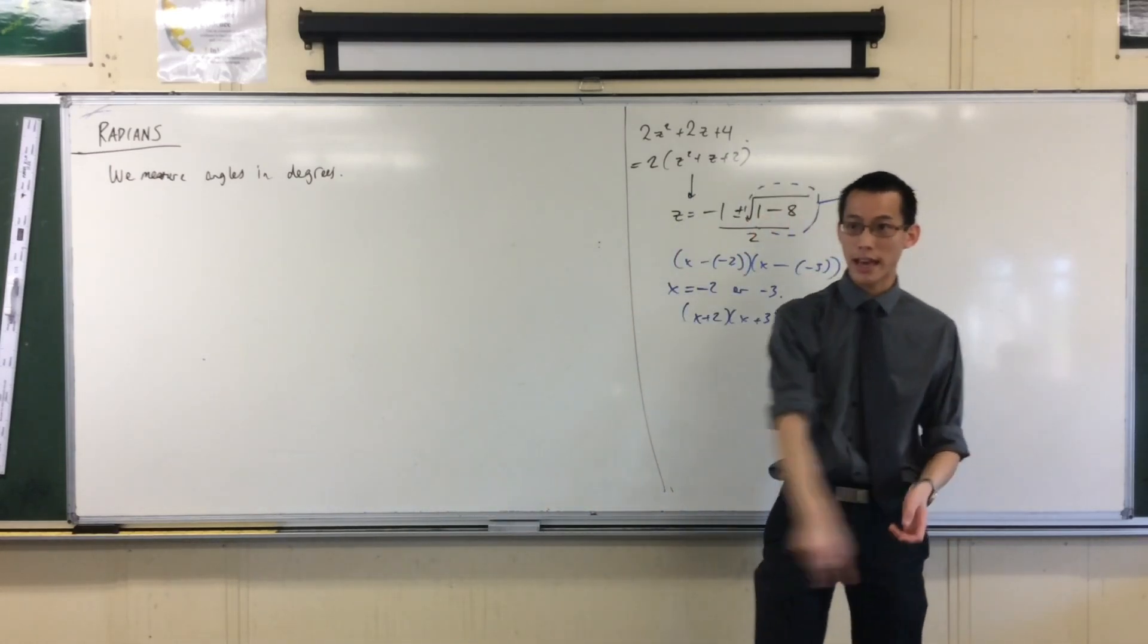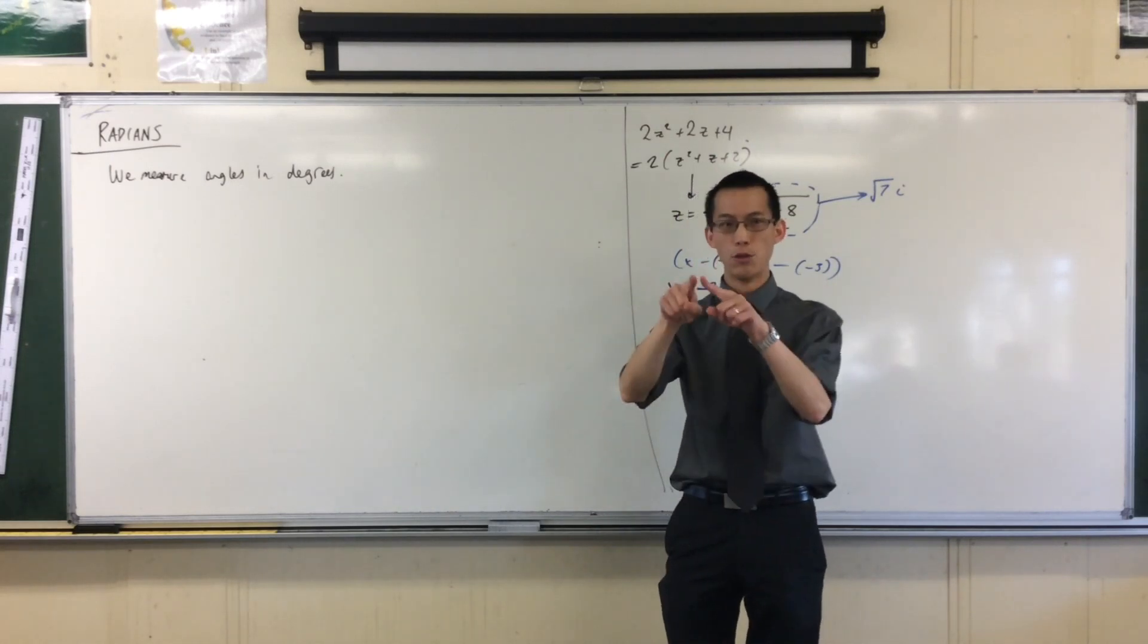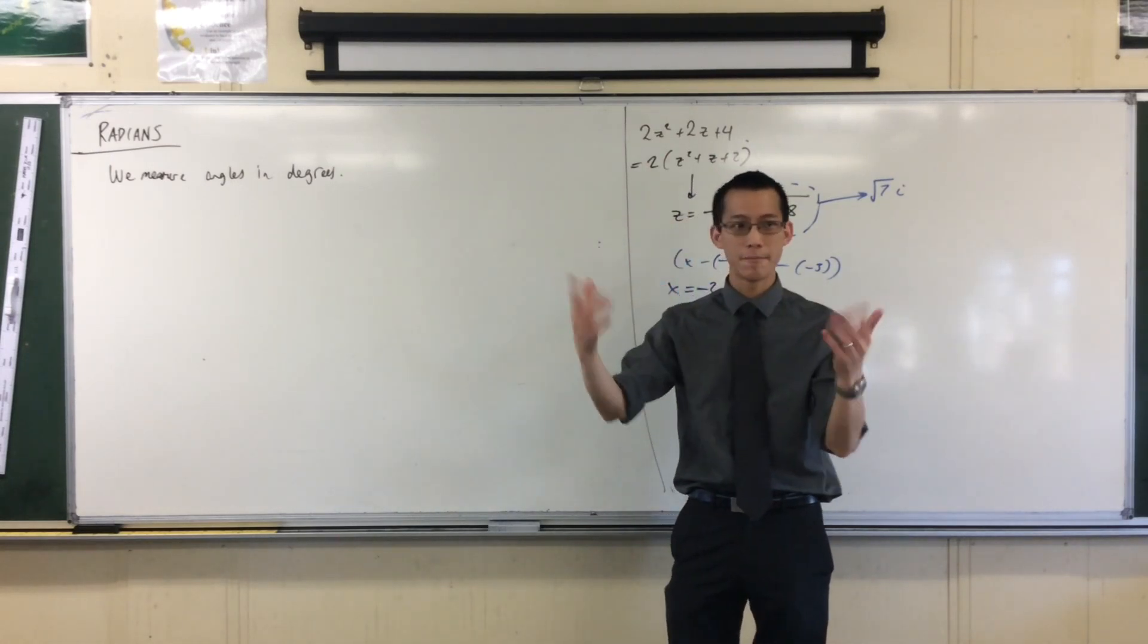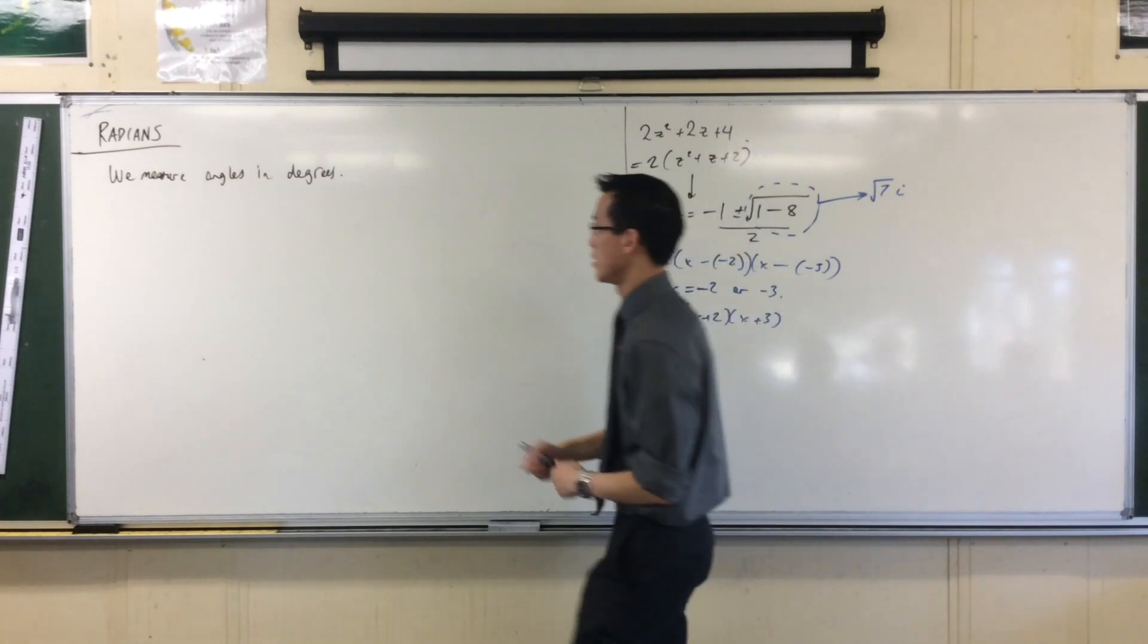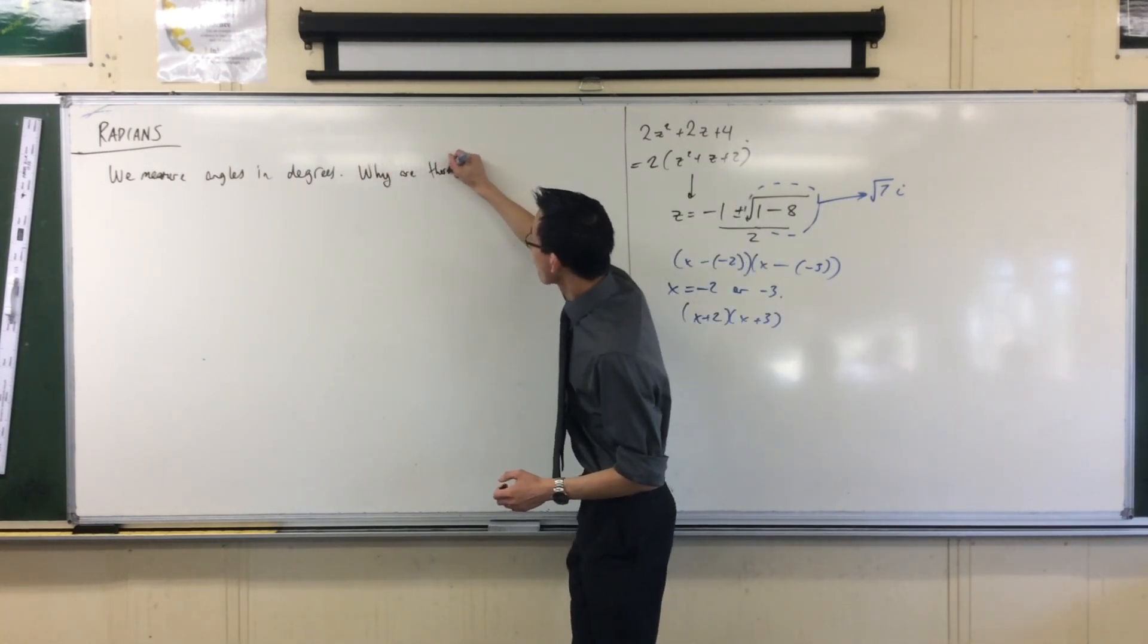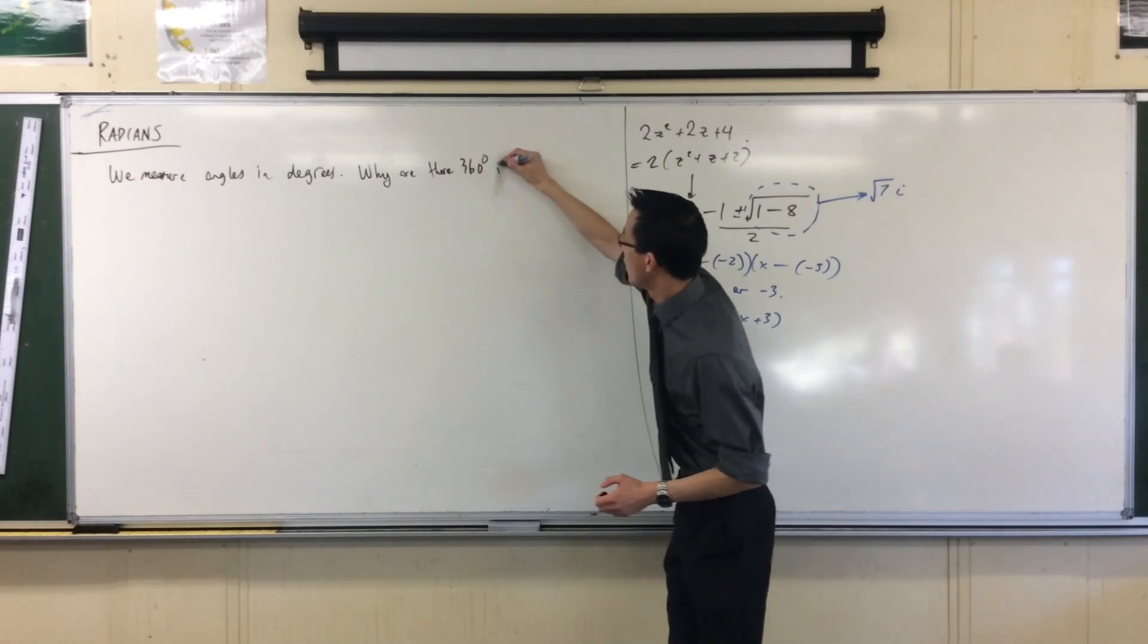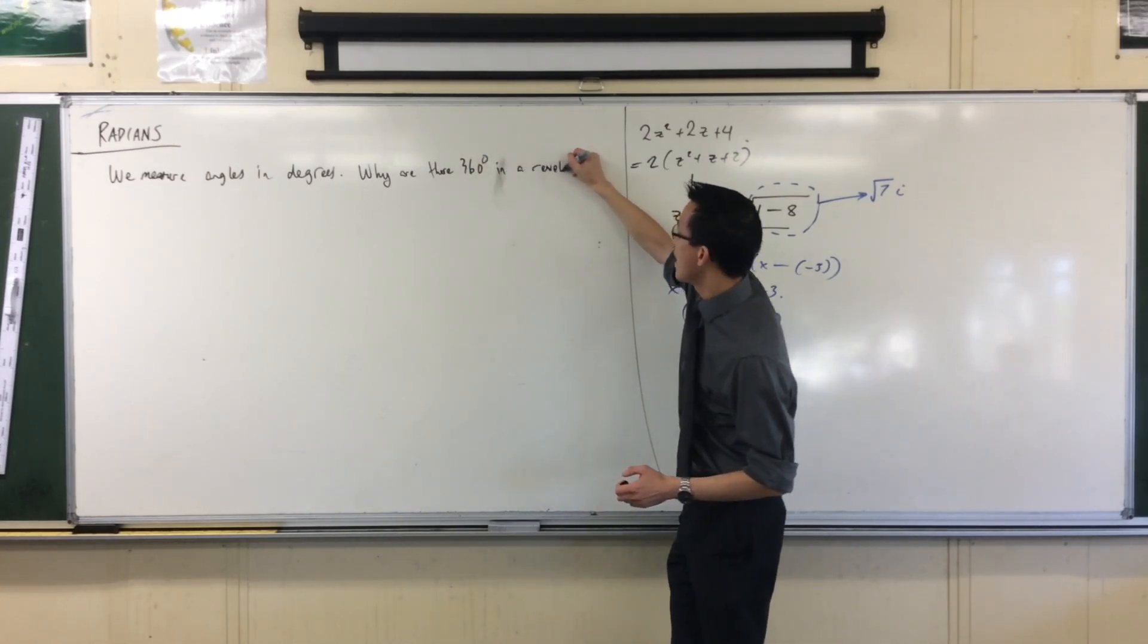Angles are about rotation. So we have how many degrees in one full rotation, one full revolution? How many? 360. Now my question is why are there 360 degrees in a revolution?